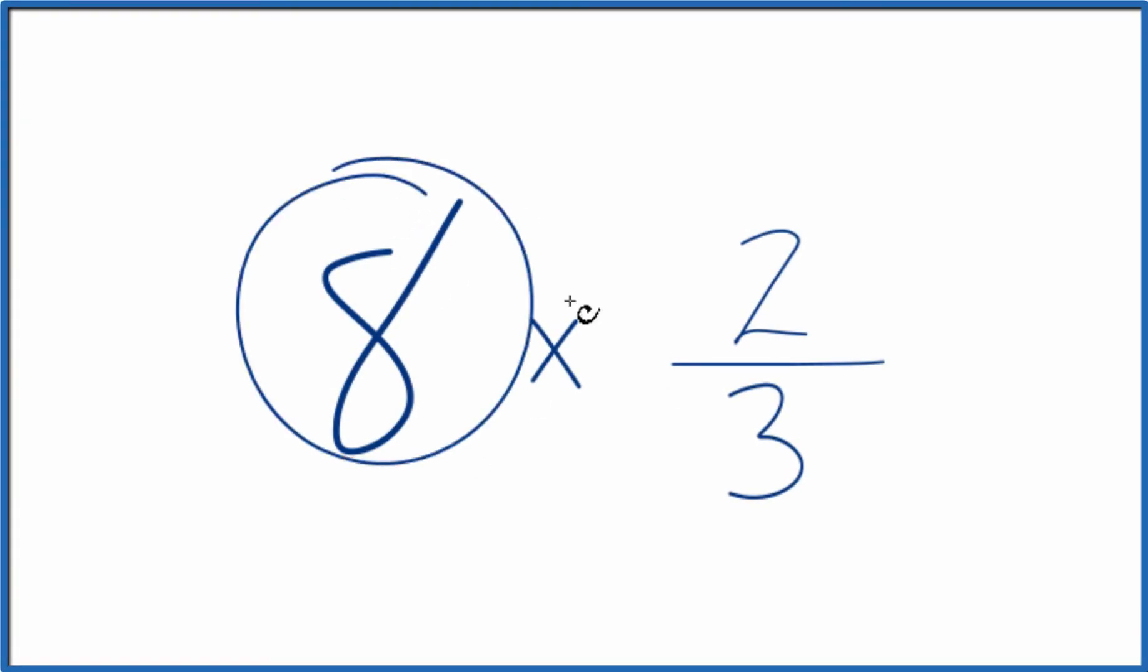If you're asked to multiply 8 times 2/3, here's how you do it. You could just add 2/3 together eight times. That would give you the correct answer for 8 times 2/3.